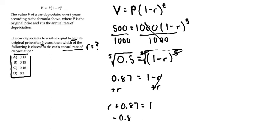To get R by itself, we subtract 0.87 from both sides to cancel that out. This gives us R equals approximately 0.13.